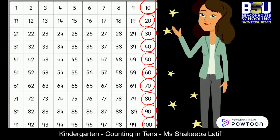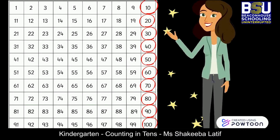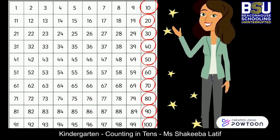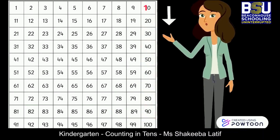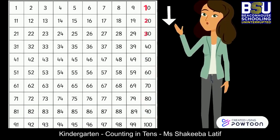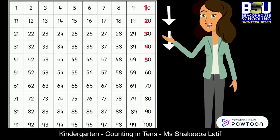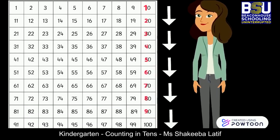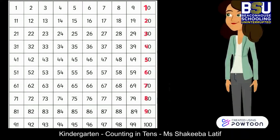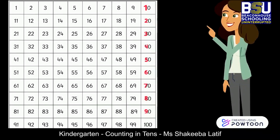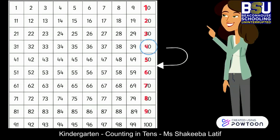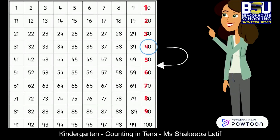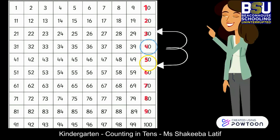If I keep counting by tens, the following pattern will be visible on your hundred square grid: 10, 20, 30, 40, 50, 60, 70, 80, 90, and 100. The numbers at the tens place keep increasing in a 1 to 9 pattern. If I want to know what is 10 more than 40, I move down the column — that is 50. And if I want to know what is 10 less, I move up — that is 30.